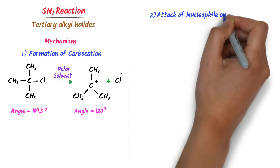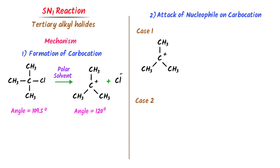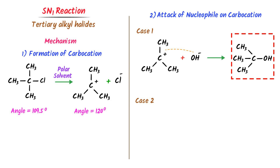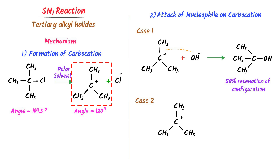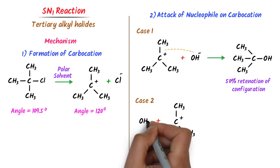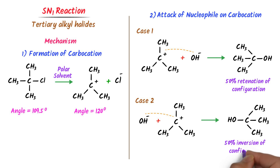The second step is the attack of a nucleophile on the alpha carbon of the carbocation. There are two possibilities of attack. In the first case, the nucleophile OH attacks from the right side, and we get this compound — the carbocation has retained its original shape 50%, so we call it 50% retention of configuration. In the second case, the nucleophile OH attacks from the left side, and as a result we get this compound — we call it 50% inversion of configuration.